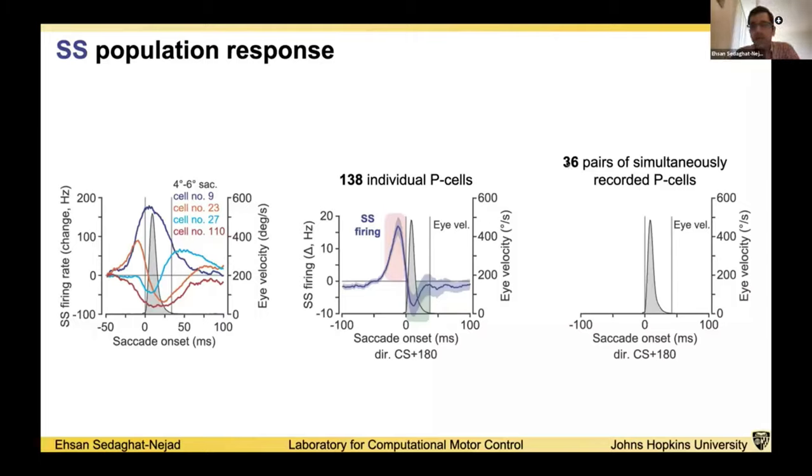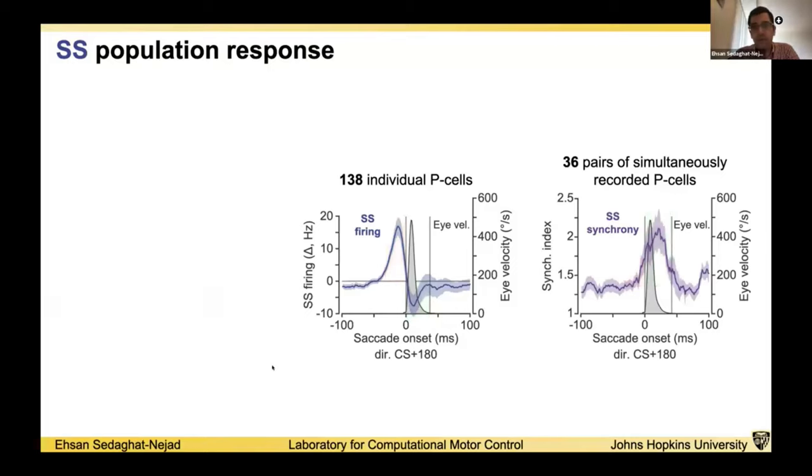More importantly, we also in our dataset have 36 pairs of simultaneously recorded Purkinje cells. If you look at the synchronization between a pair of Purkinje cells, what we found is that during the acceleration phase, although we had a burst in activity, we don't have any increased synchronization. However, during the deceleration phase of the eye movement where we had the pause in activity, we actually see higher synchronization in the pairs of Purkinje cells, which is kind of counterintuitive.